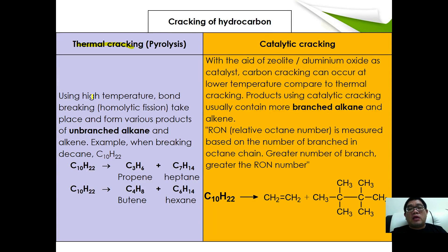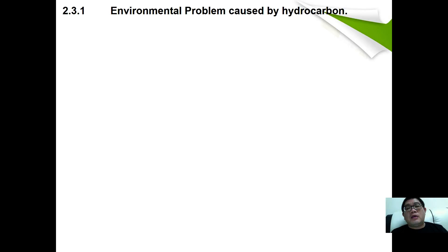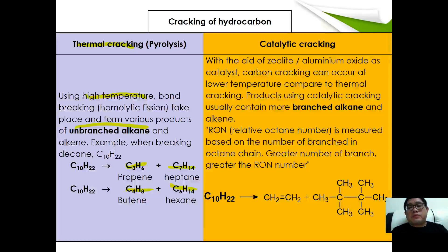Thermal cracking uses high temperature, and homolytic fission usually takes place. Most of the time, the product is unbranched alkane with alkene. For example, if you're breaking decane C10H22, you break into propene and heptane. It can also break into butene and hexene. When cracking alkane into two products, usually one is alkane and one is alkene. If breaking into three products, one will be alkane and two will be alkene.